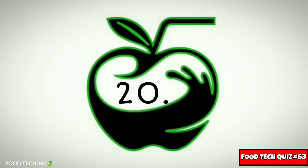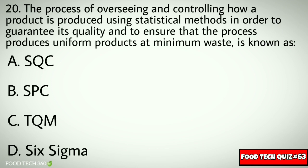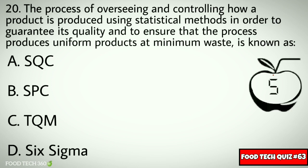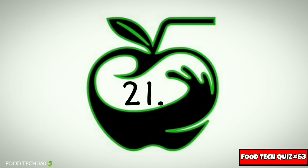Question No. 20. The process of overseeing and controlling how a product is produced using statistical methods in order to guarantee its quality and to ensure that the process produces uniform products at minimum waste is known as: Options: A. SQC, B. SPC, C. TQM, D. Six Sigma. Correct answer: A. SQC.